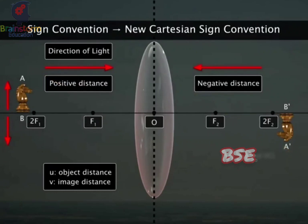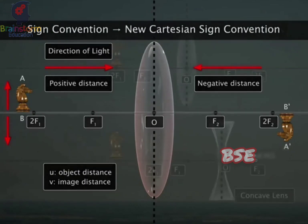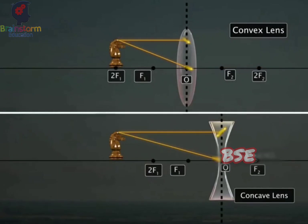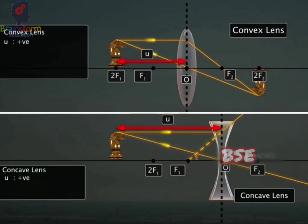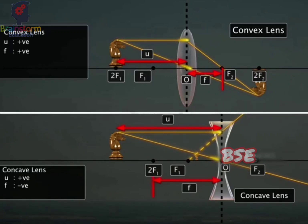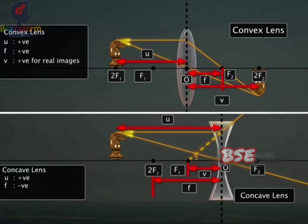The sign conventions followed for lenses are the new Cartesian sign convention with the optical center as the origin. Thus, for spherical lenses: U is always positive; F is positive for convex lenses and negative for concave lenses; V is positive for real images and negative for virtual images.